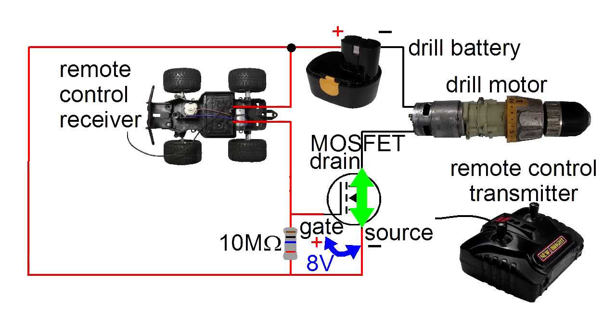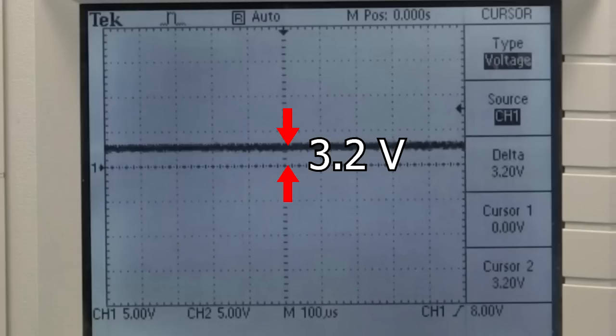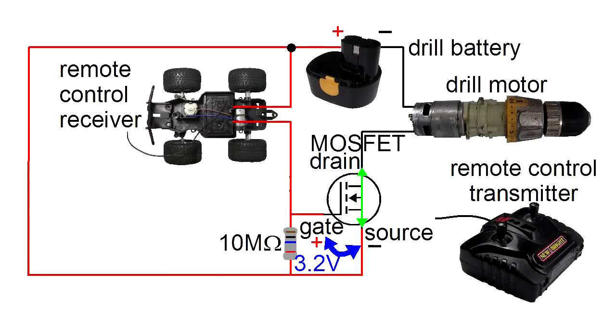I first tried without these batteries. When I turn the remote control on, I get around 3.2 volts. That's 3.2 volts between the gate and source. This resistor is a 10 megaohm resistor, or 10 million ohms, quite a large one.